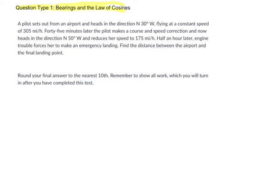So in this situation, what do we have? Let's go through it. We have a pilot. They set out from an airport, and they head in this direction, north 30 west, flying at a constant speed of 305 miles per hour. And it says 45 minutes later, the pilot makes a course and speed correction, and now heads in a different direction. Now, there's a lot of oversimplification in this problem. Let's just acknowledge that, first of all. We're not looking at the curvature of the Earth. We're not examining the distance it takes to land the plane. We're oversimplifying this problem.